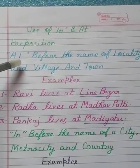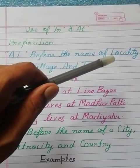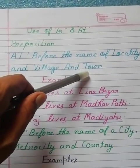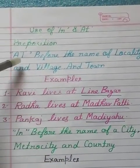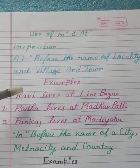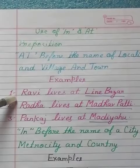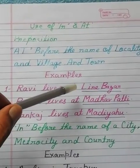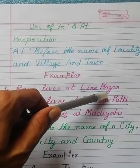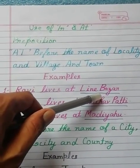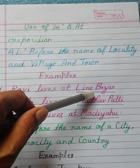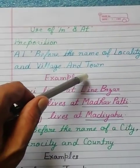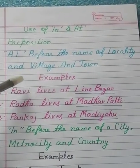जो 'at' का यूज होता है, ये किसी स्थान या एरिया, गाँव या कस्बे के नाम से पहले 'at' का प्रयोग होता है। ठीक है? अब एक्जाम्पल देख लीजिए। रवी लिवस एट लाइन बजार। तो इस एक्जाम्पल में आप देख रहे हैं, लाइन बजार को अंडर लाइन किया गया है, क्योंकि लाइन बजार लोकैलिटी है। ठीक है? तो मैंने बोला था, किसी लोकैलिटी हो, या फिर टाउन हो, या विलेज हो, इनके नाम से पहले 'at' लगता है।